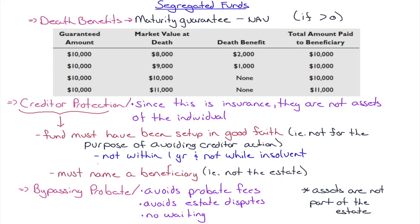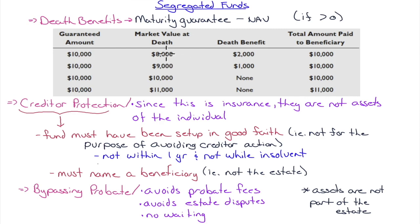The second feature the insurance contract brings is death benefits. The death benefit equals the maturity guarantee minus the net asset value, if that difference is greater than zero. Let's look at scenarios with a $10,000 guaranteed amount: if market value at death is $8,000, the insurance company liquidates the assets for $8,000 and kicks in $2,000 of their own — the death benefit — so the total paid to the beneficiary is $10,000.